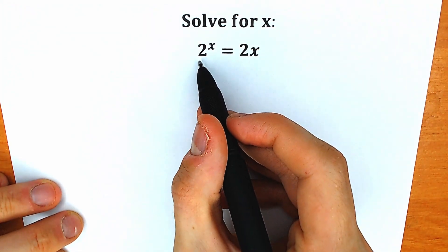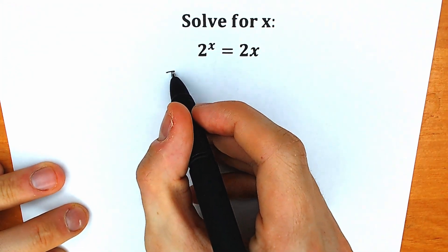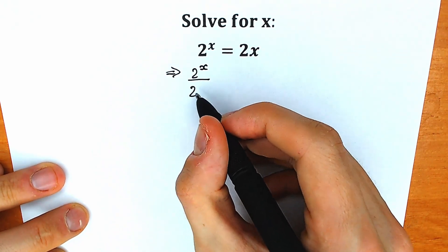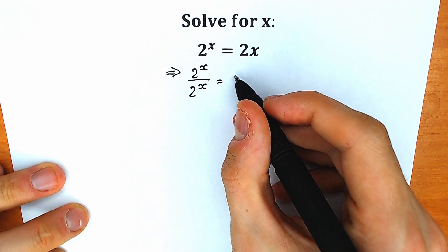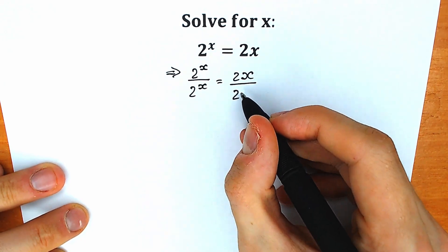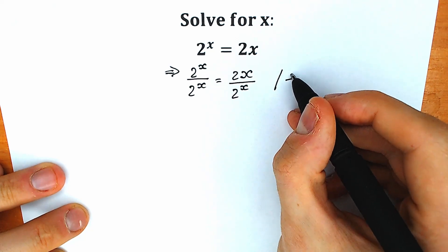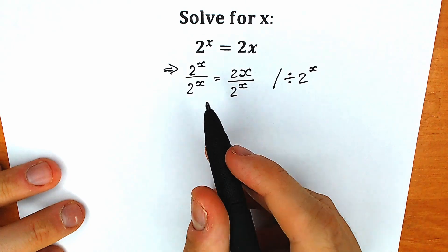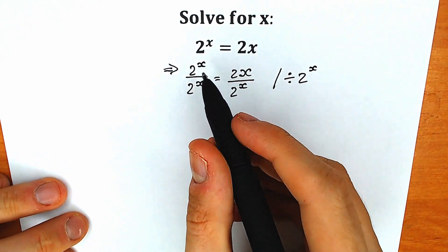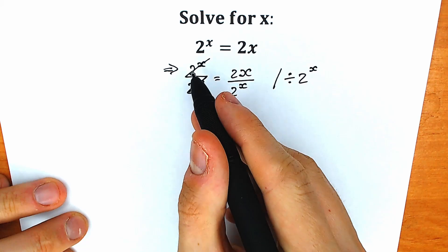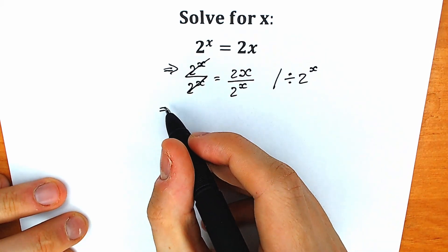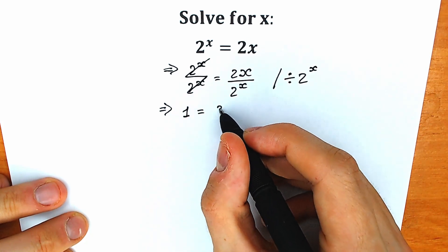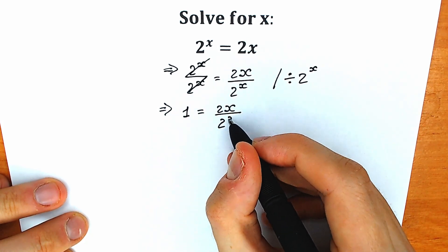First of all, let's divide both sides by 2 to the power x. Our first step: we divide both sides by 2 to the power x. As a result, we have 2 to the x over 2 to the x equal to 2x divided by 2 to the power x. We cancel the numerator and denominator on the left side, and as a result we have 1 on the left side and 2x divided by 2 to the power x on the right side.